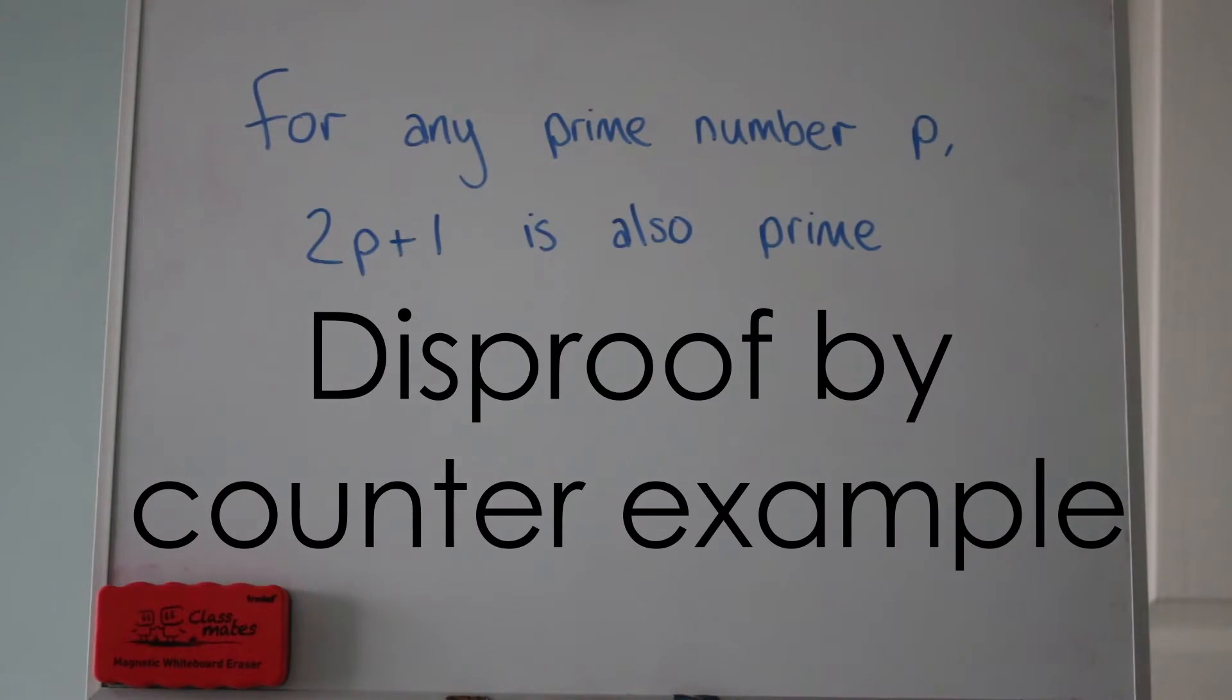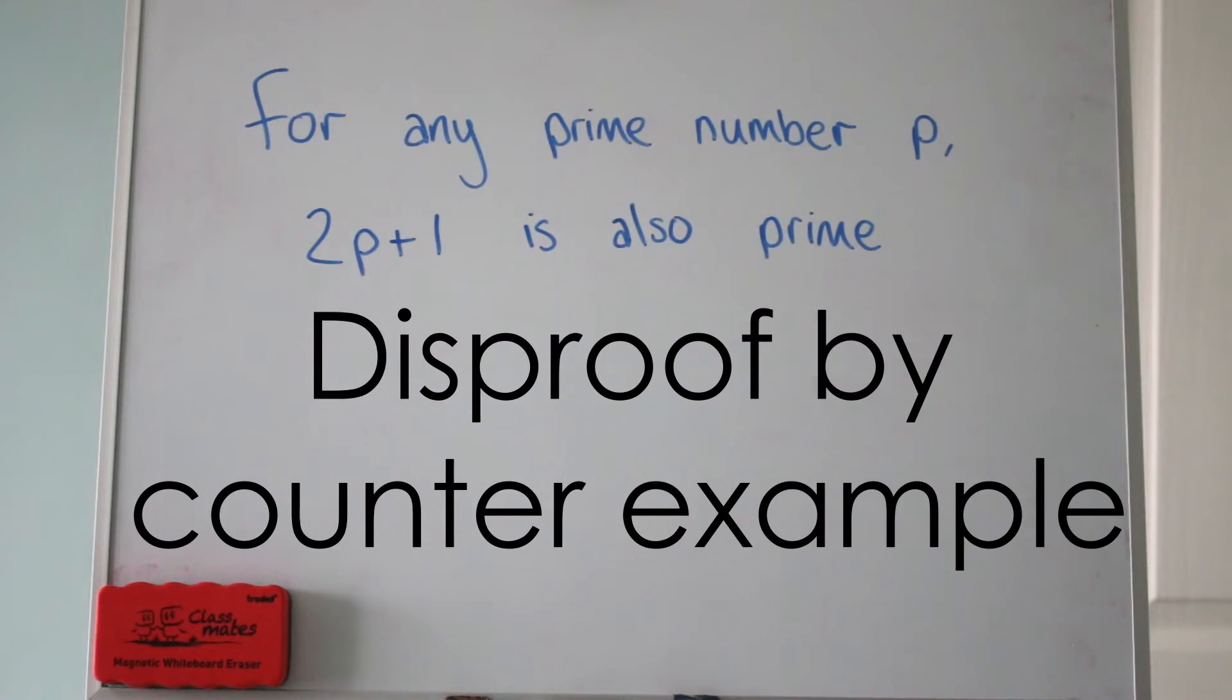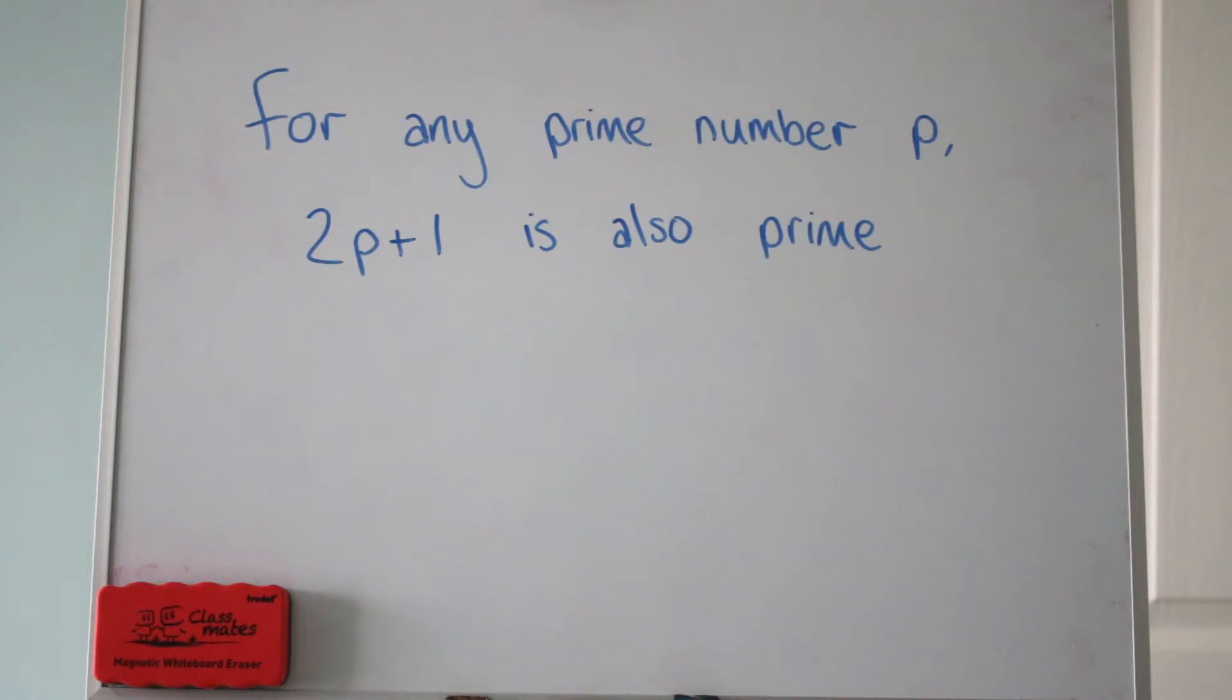We're going to kick off today with disproof using a counter example. So we have our first statement here, and what we want to do is show that this statement is not true. We want to disprove it. The statement is claiming that for all prime numbers p, 2p plus 1 is also prime, and all we need to do is find one example that will break it, one example that it doesn't work for. So we're looking for one example of one number, a prime number, such that 2p plus 1 is not prime.